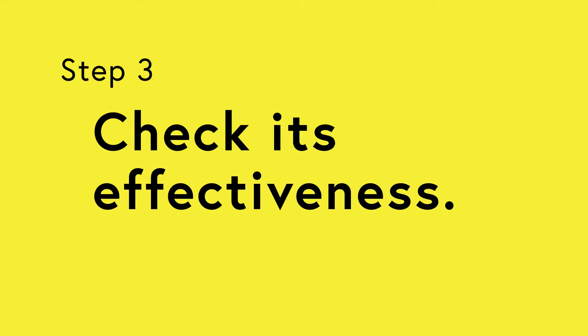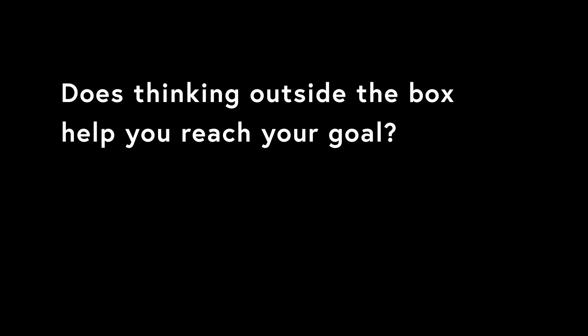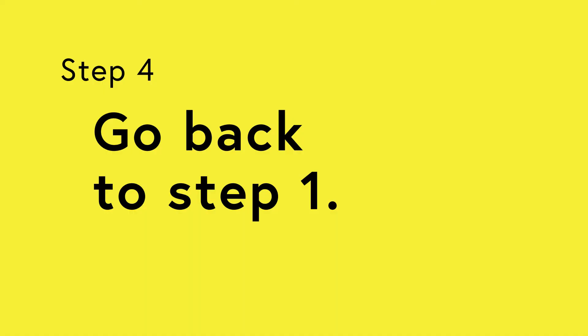Step 3 is to constantly check its effectiveness. Once you have broken a rule and it works, it feels good. But there's a danger here — every time you encounter a problem, the tendency is to break the rule every time. You have to constantly check: does breaking the rule really fit the problem right now, or are you just breaking it for the sake of thinking outside the box? If it turns out it doesn't help you fix the problem, then go to Step 4, which is to go back to Step 1.